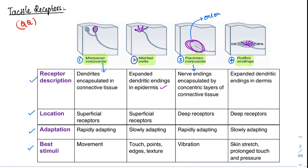Regarding location: the first two starting with M — Meissner's and Merkel's — are located superficially, while the deep receptors, Pacinian and Ruffini, are located deep. Meissner's and Pacinian are both corpuscles, both encapsulated, and both are rapidly adapting. Merkel's and Ruffini are slowly adapting.